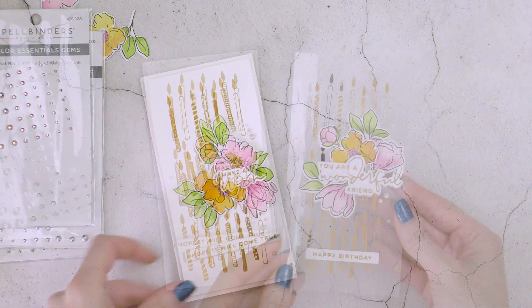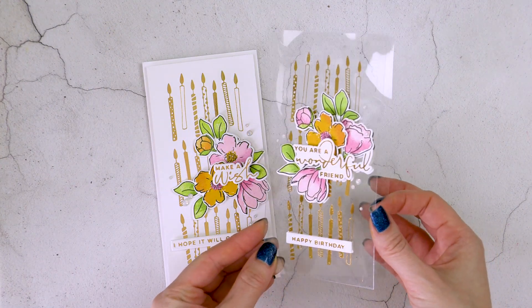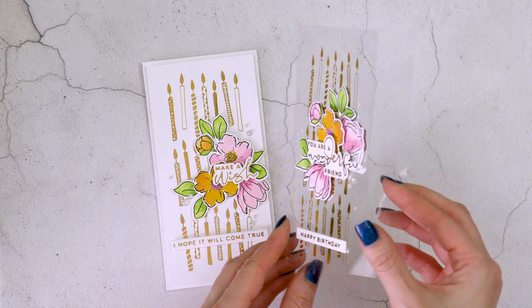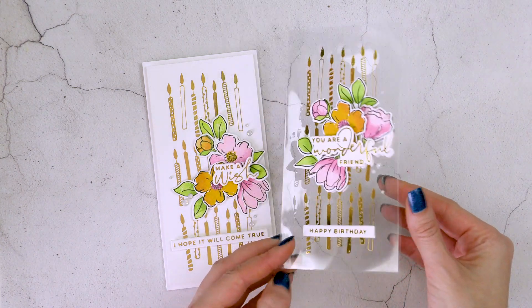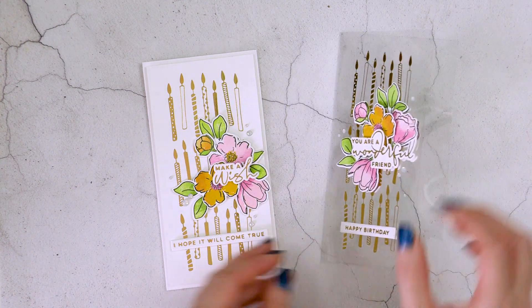And here's a look at the finished projects created with the new Simon Says Stamp blooming meadow stamp set and birthday candle glimmer background plate.